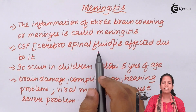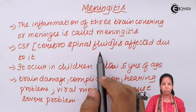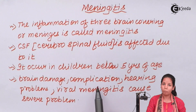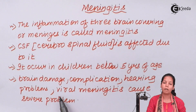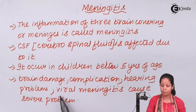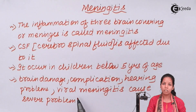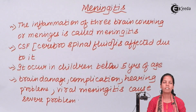Meningitis is basically caused by certain infectious agents, which are bacterial, when they attack the meninges of the brain. Brain damage, complications, hearing problems, and dissociation problems are some of the symptoms associated with this. Viral meningitis is more severe because it can lead to rare brain complications.